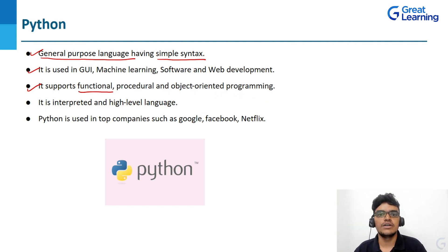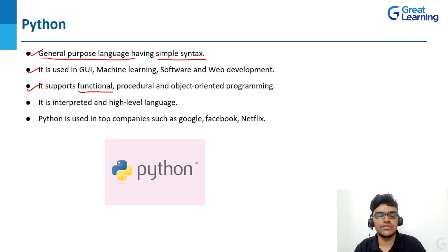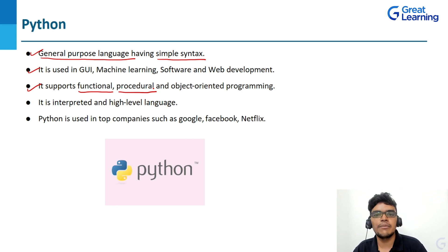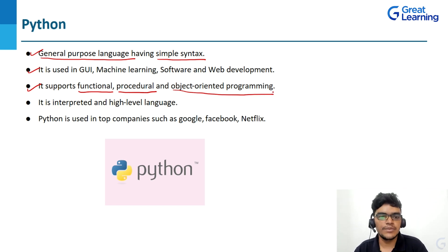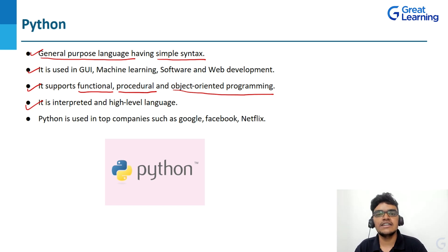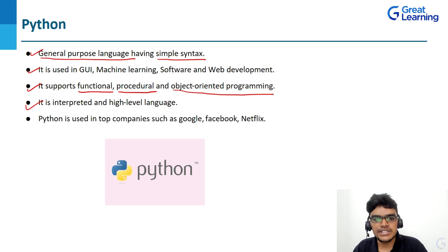Python supports functional programming, where programs are constructed by applying and composing functions. In procedural programming, we use a stepwise procedure to develop an application. In object-oriented programming, we deal with classes and objects. Python is also an interpreted and high-level language — source code is converted into bytecode and then executed by the Python virtual machine.